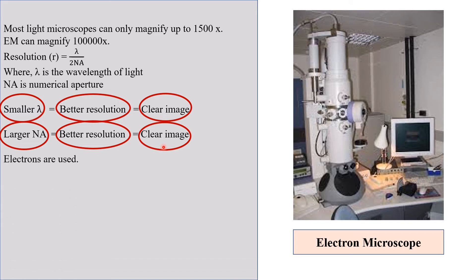Now in electron microscope, we use electrons instead of light energy to make the sample visible.